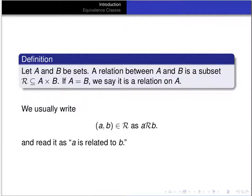We usually write that A is related to B as A R B, instead of saying that the ordered pair (A, B) is an element of the relation. When we write A R B, we read it as "A is related to B." That's the common practice with relations such as less than or equal, and it's the practice that will continue when we're talking about equivalence relations and other relations.